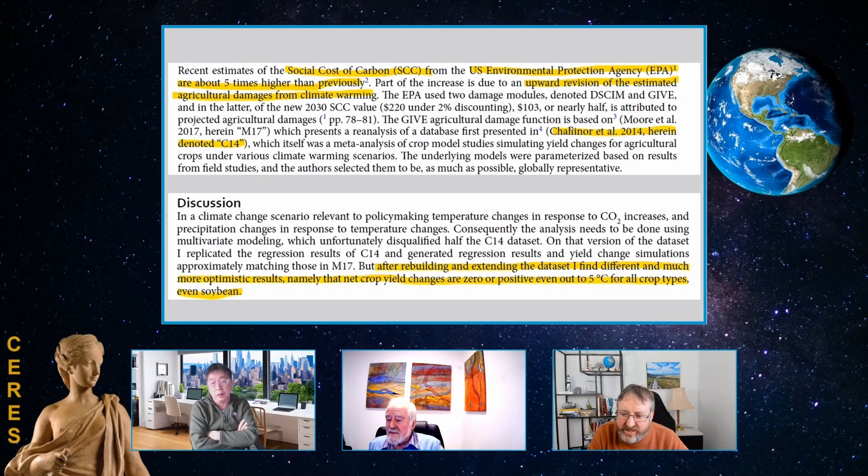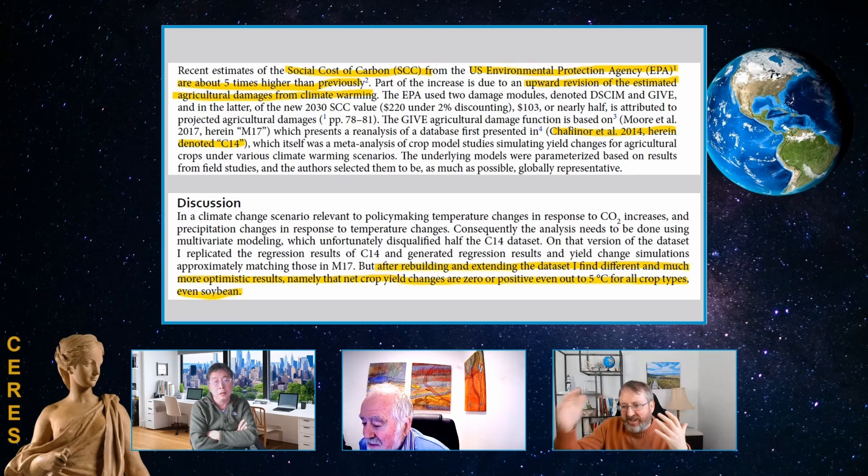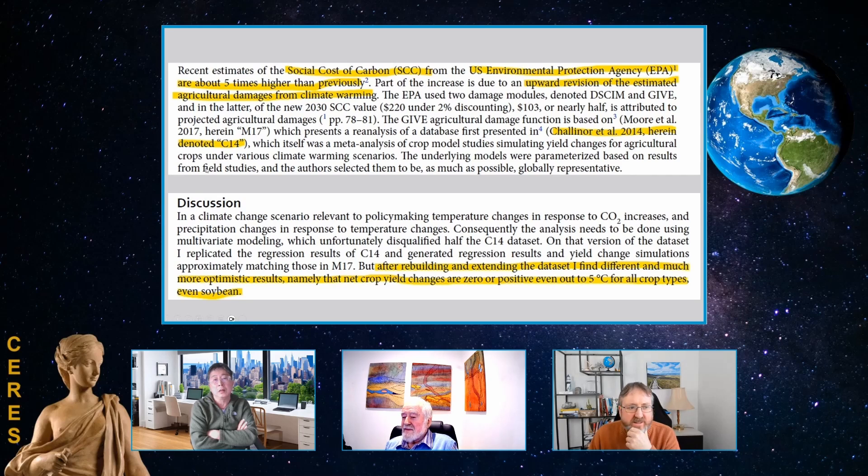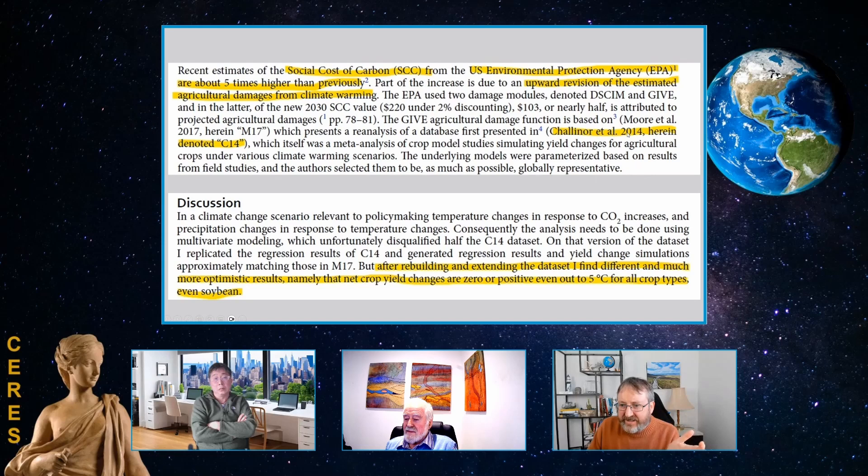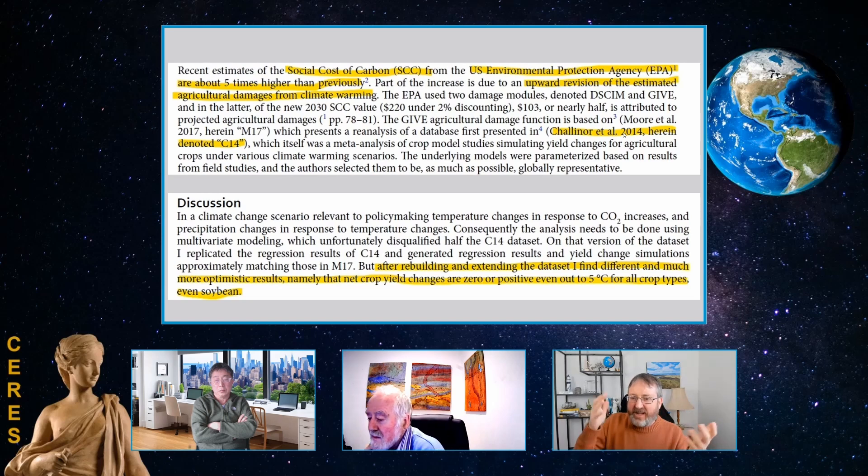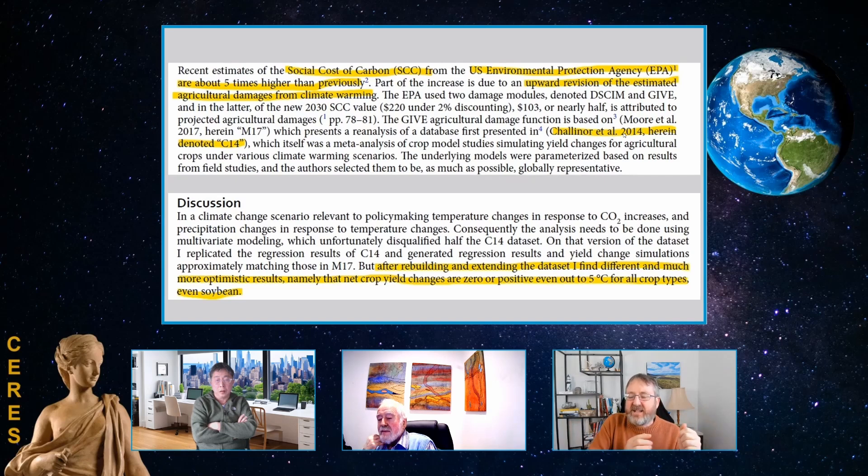An important point here for people that are following along. What this study has done is that it's shown that the science can change, the conclusions can change when the data is updated. And it can change quite dramatically. So this study, Moore et al., 2017, had gone and used this Chaloner data set. And they had concluded that the crop yields are going to reduce dramatically with any amount of global warming. And then that was added into the U.S. EPA's estimate of how expensive carbon emissions are. And that's then going to influence government policies.